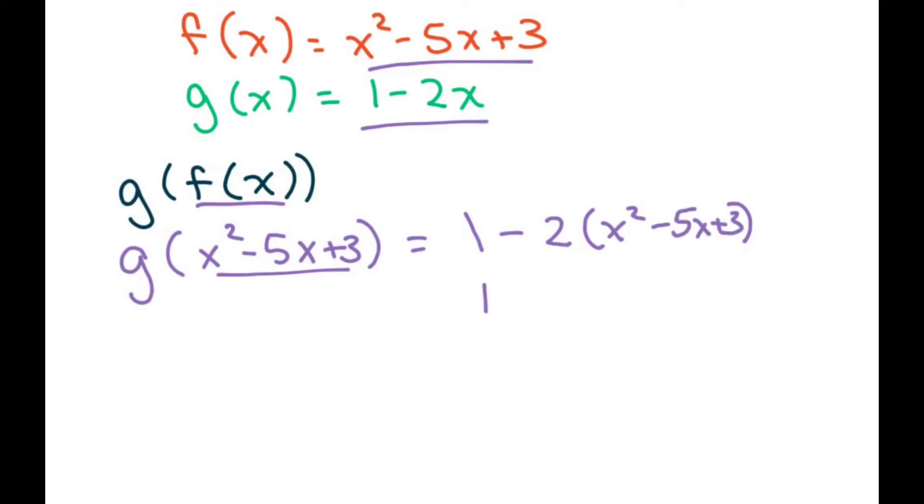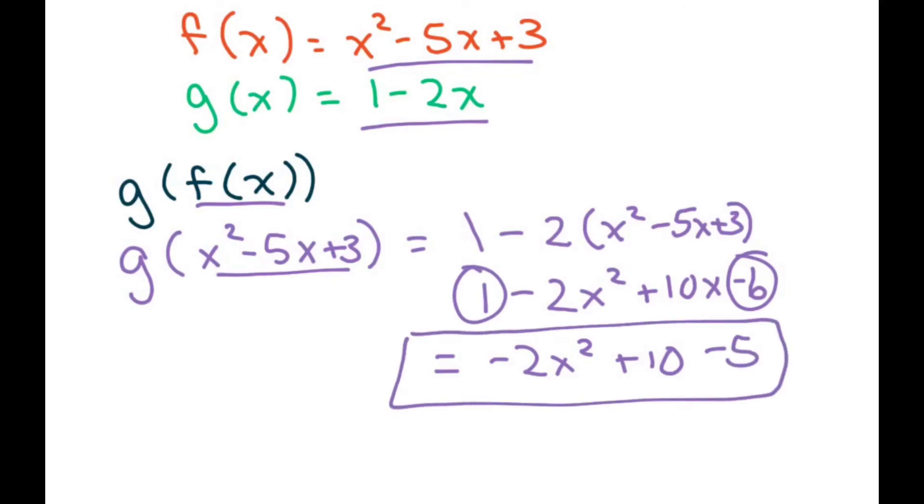So we're going to have 1, distribute the negative 2, and then just clean it up. So we're going to get negative 2x squared plus 10x. And then we have 1 minus 6 is negative 5. So that would be your final answer.